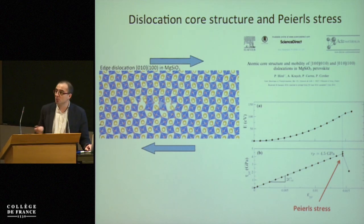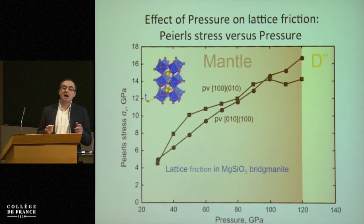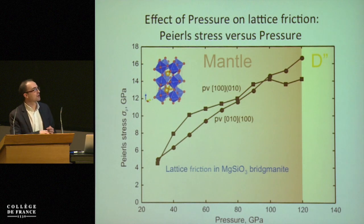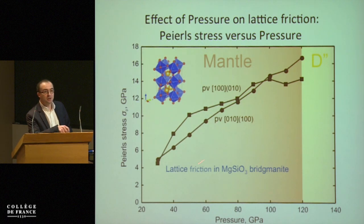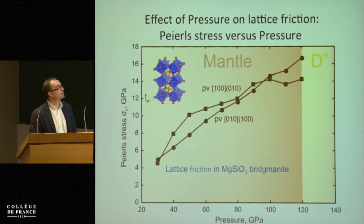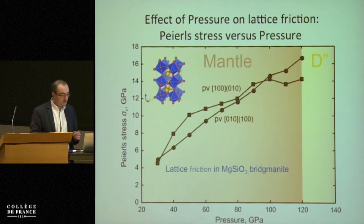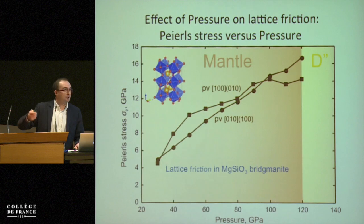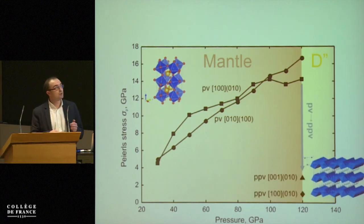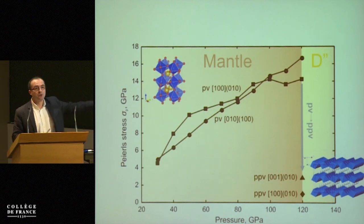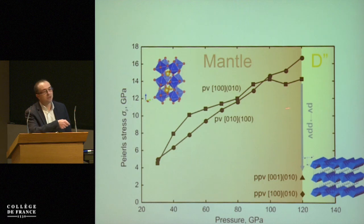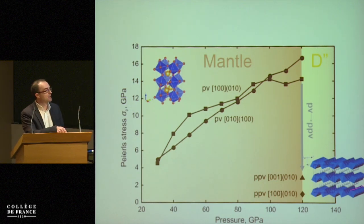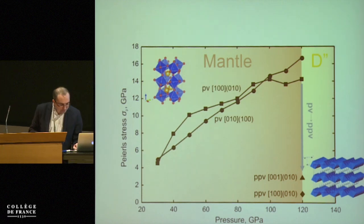Another advantage of atomistic calculations is that we can track how the Peierls stress evolves as a function of pressure. In bridgemanite, for two typical slip systems, the Peierls stress increases strongly with pressure — this is classically what happens. However, there is an interesting exception: when you go from bridgemanite to post-perovskite, there is a huge drop in mechanical properties because the Peierls stress in post-perovskite is very low compared to bridgemanite — making it a really weak phase mechanically.